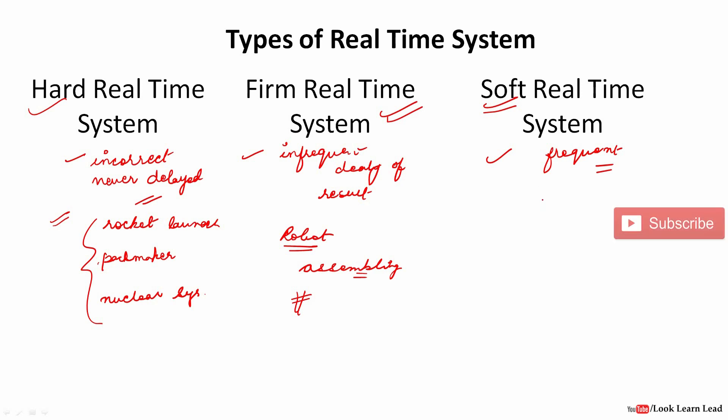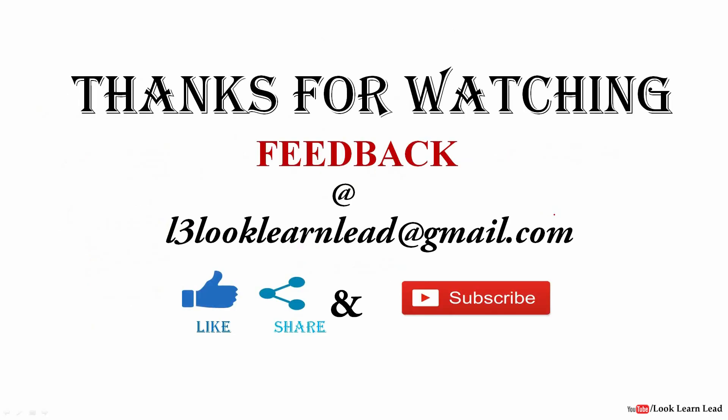An example of a soft real-time system is audio playback on a computer — if there is a lag between audio and video, it falls under soft real-time, since it won't cause catastrophic changes to the environment. In summary, there are three types: hard, where deadlines must always be met; firm, where infrequent misses are acceptable; and soft, where even frequent deadline misses are not dangerous.